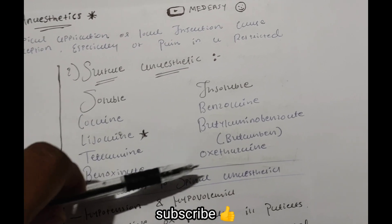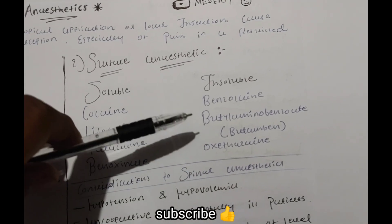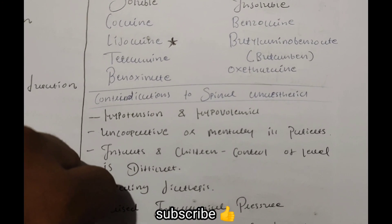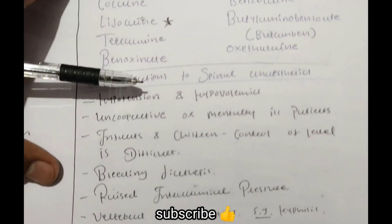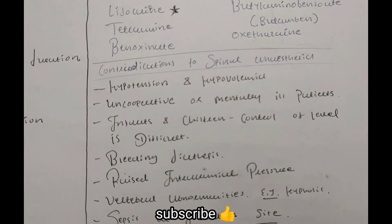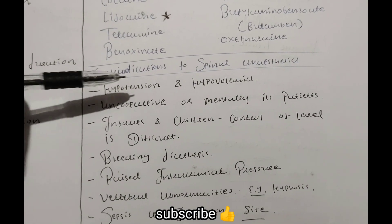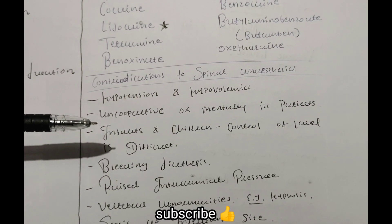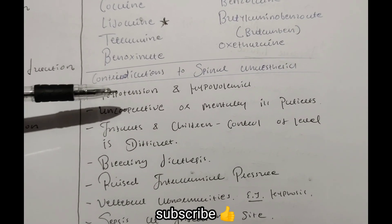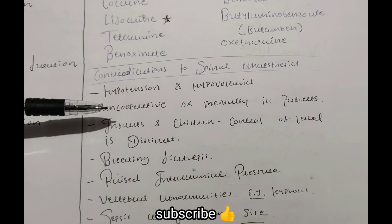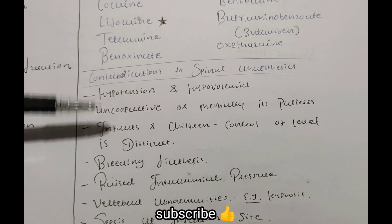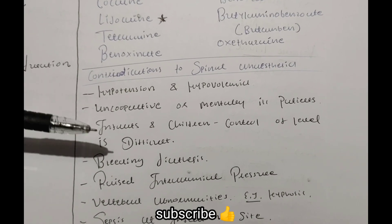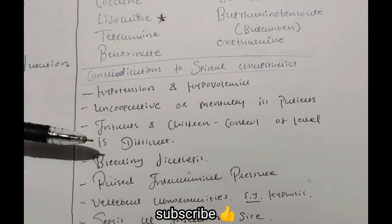This is the contraindication to spinal anesthesia. When there is contraindication: hypotension and hypovolemia, uncooperative or mentally ill patient. This is contraindication in infants and children because control of level is difficult.